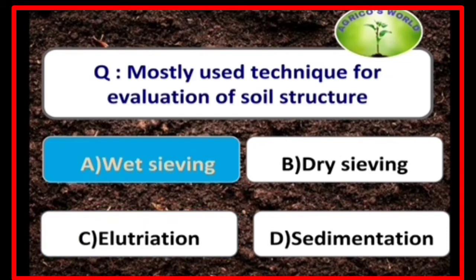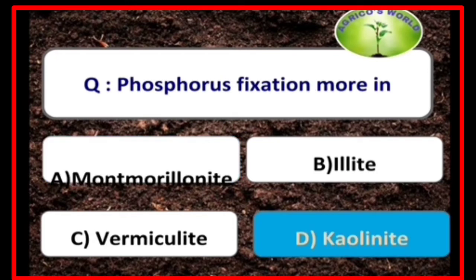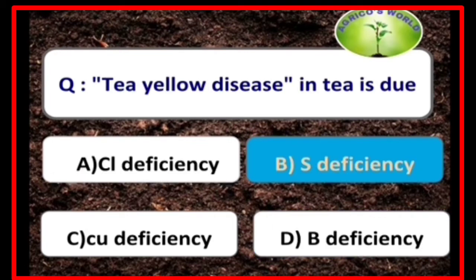Wet sieving is the mostly used technique for the evaluation of soil structure. Phosphorus fixation is more in kaolinite.